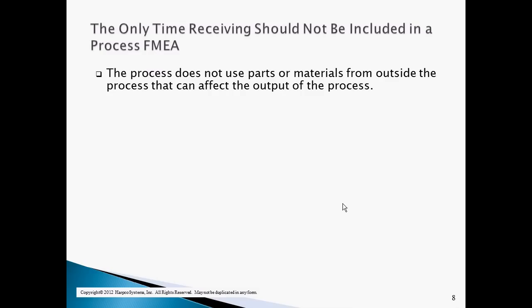There is one time when receiving should not be included in the process FMEA: when the process does not use any parts or materials from outside the process that can affect the output of the process.